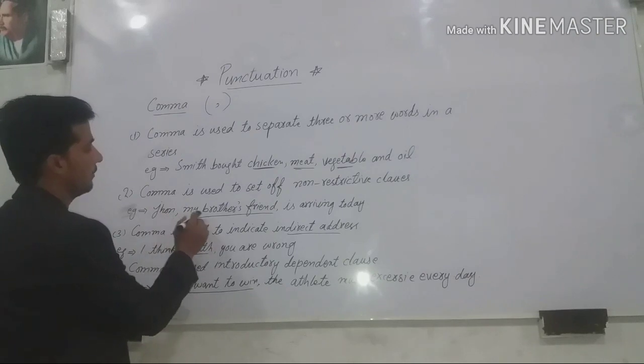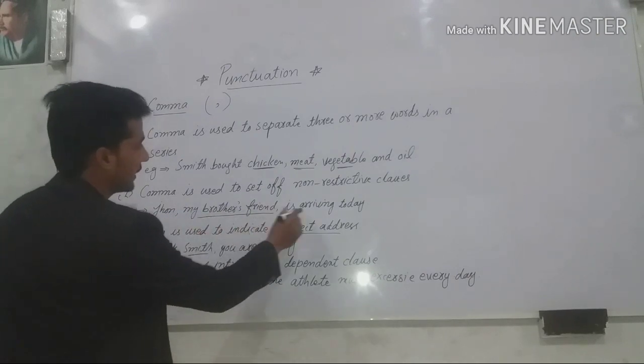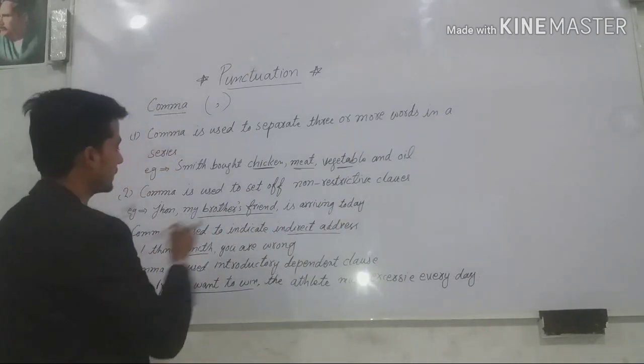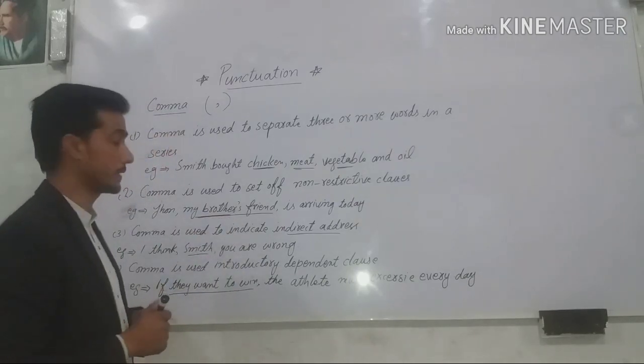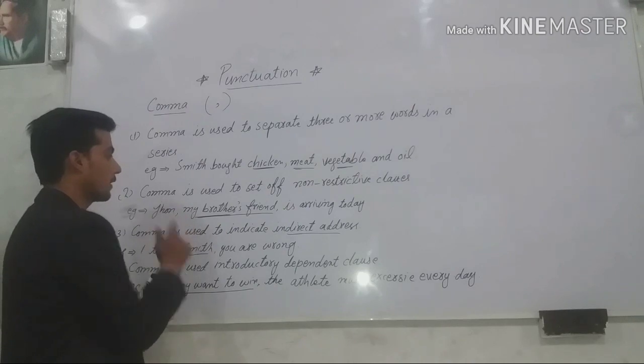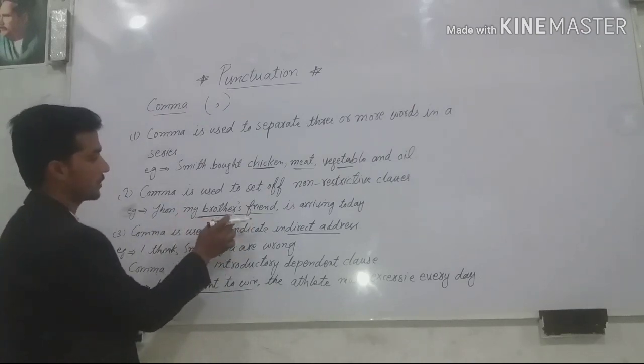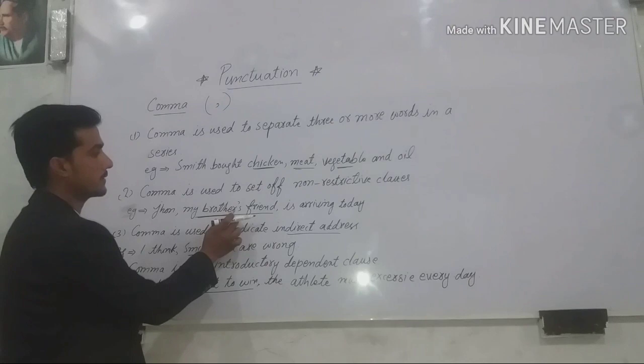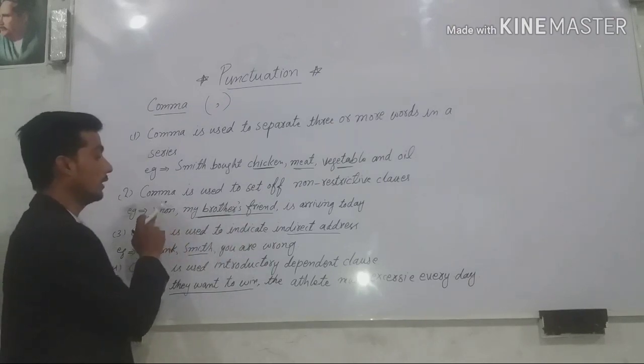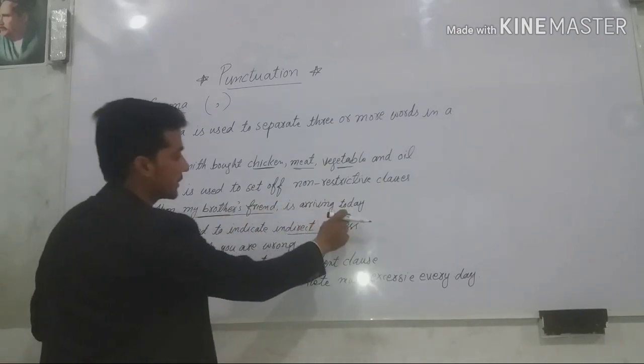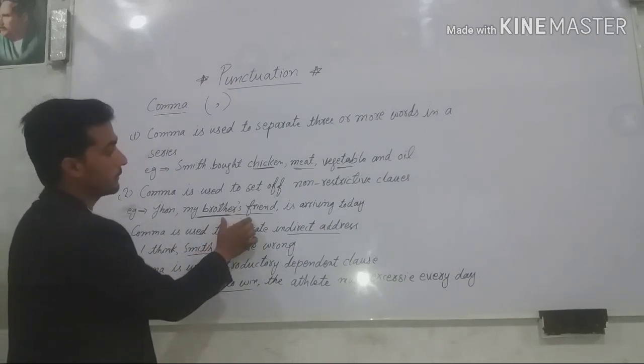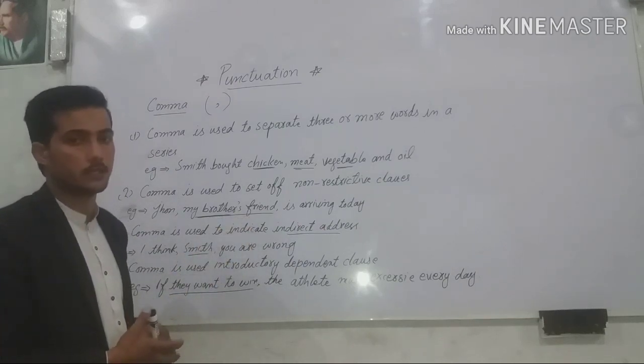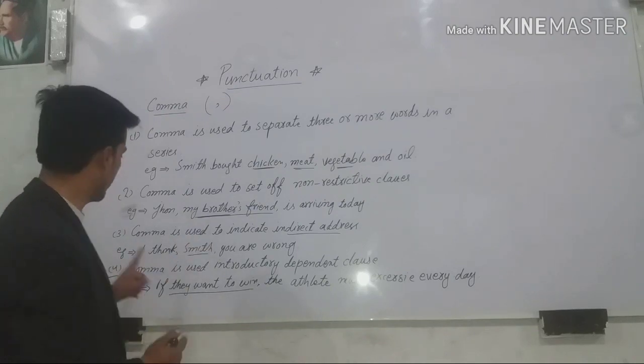John, comma, my brother's friend, comma, is arriving today. So you can see it from this place, my brother's friend. It is non-restrictive clauses, it is separated by comma. So now, you just look at, just put away this one, so it will still give sense. Like, look at this one, John is arriving today. So it means that non-restrictive clauses can be separated by the use of comma. So we came to, okay, the third one.